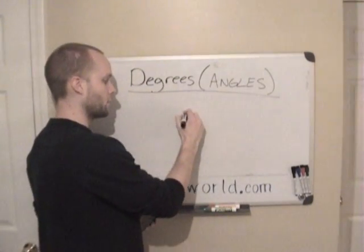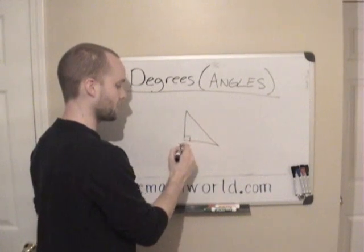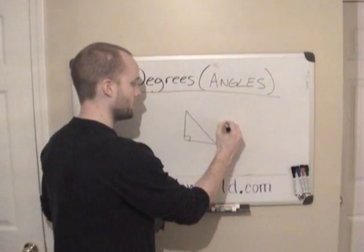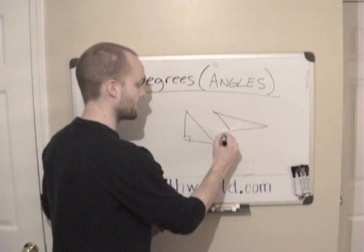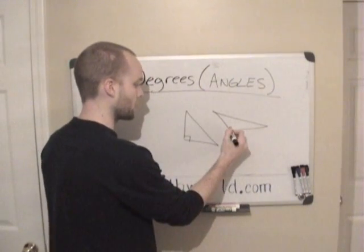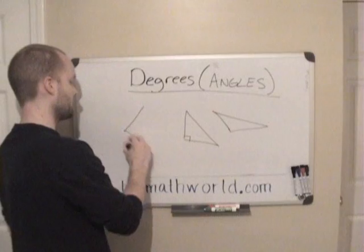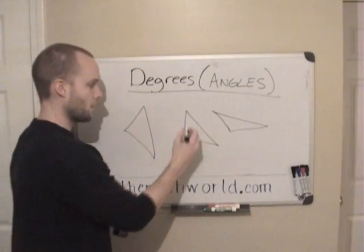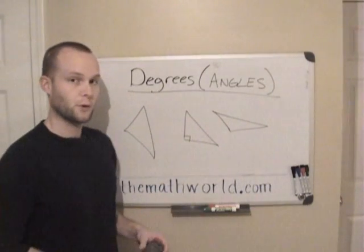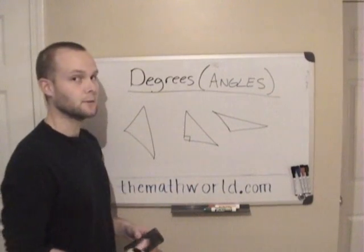Another thing you also want to know is that in a triangle — it doesn't matter what type of triangle it is — all the angles in the triangle will add up to 180 degrees.